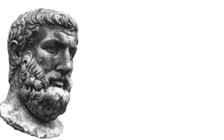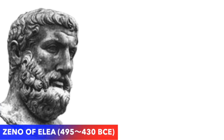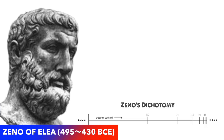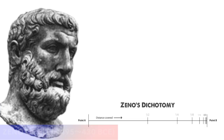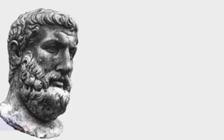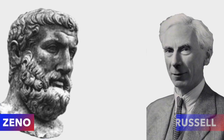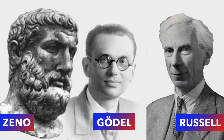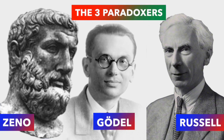Next we move on to Zeno of Elea, who lived from 495 BCE to 430 BCE. He came up with his paradoxes, which talked about infinitesimally small space fragments and time fragments. His point was not to make people believe that movement is impossible; on the contrary, he wanted to show that not everything can be explained by pure logic alone. Later, Bertrand Russell and Kurt Gödel would carry on Zeno's legacy of finding limitations and paradoxes in systems of pure logic.